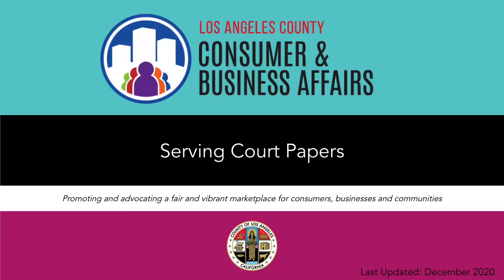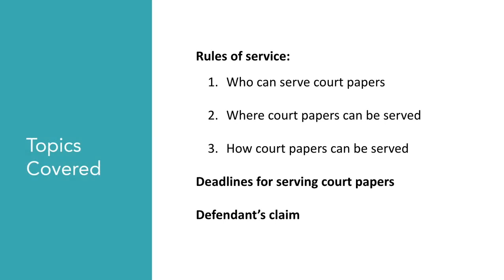In this video, we will go over the process and requirements for notifying parties to attend a hearing in small claims court. This process is referred to as serving court papers. We will assume that you have already filed the plaintiff's claim and received back the stamped copies from the court clerk. Now it's time to serve the court papers on the defendant. This process ensures all parties are aware of the claim filed, so the rules are strict and must be followed closely. If a mistake is made while serving the defendant, you may jeopardize the outcome of your case. There are three sets of rules: who can serve court papers, where court papers can be served, and how court papers can be served.